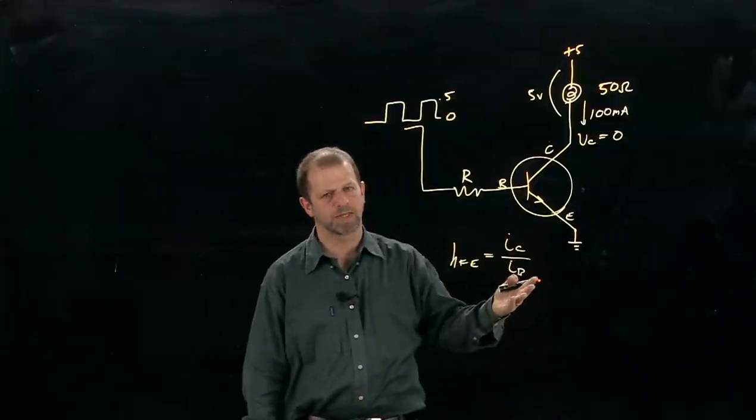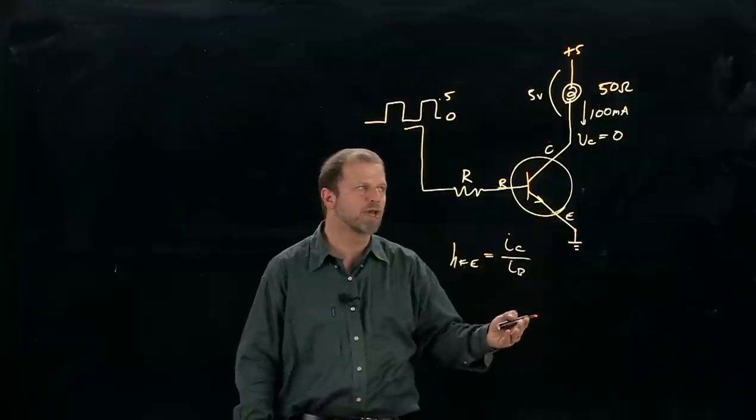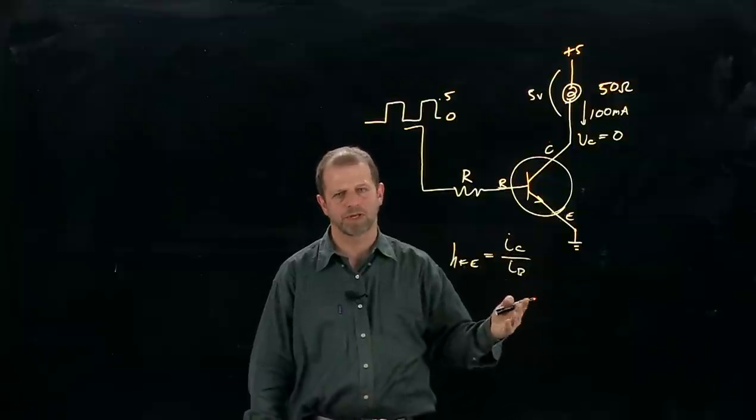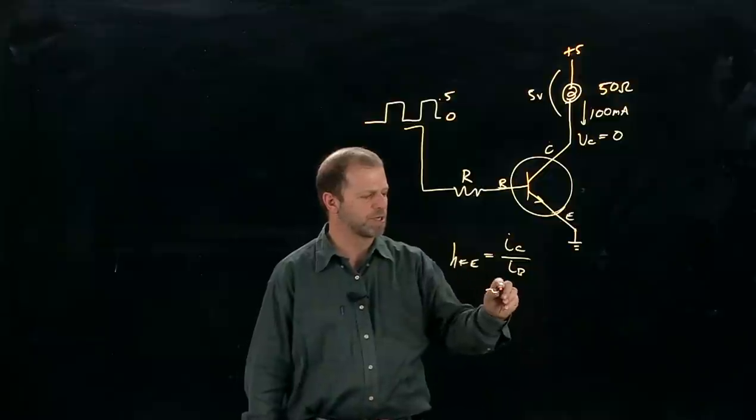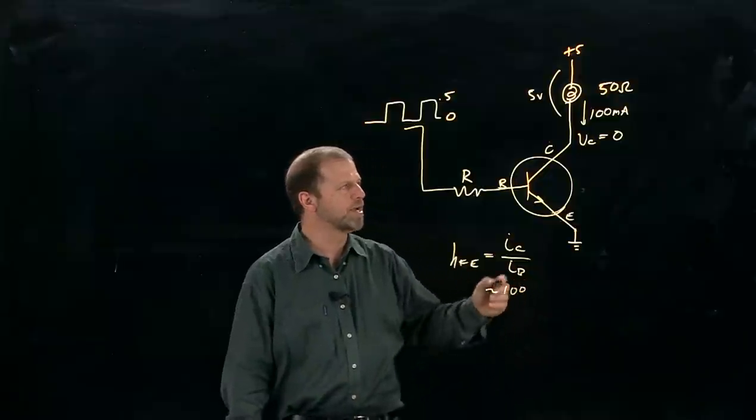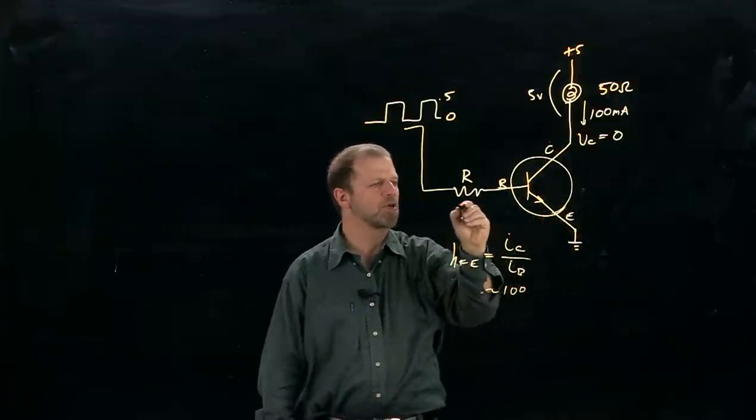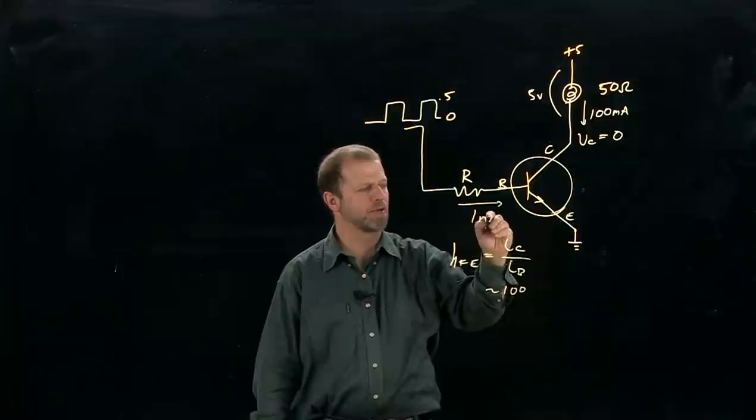We certainly wouldn't want to assume that the current gain is 200 and then only find out later that this particular transistor had a gain of 140. So let's make that safe assumption that the gain is 100, and that says if we need a hundred milliamps, we need one milliamp going this way.